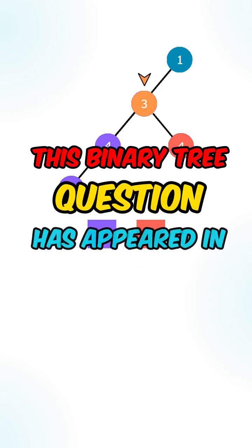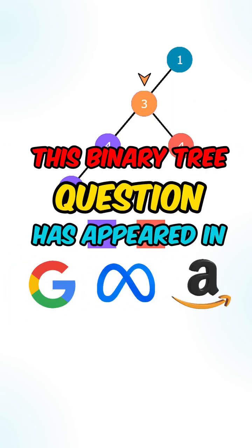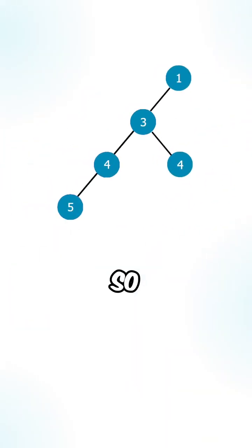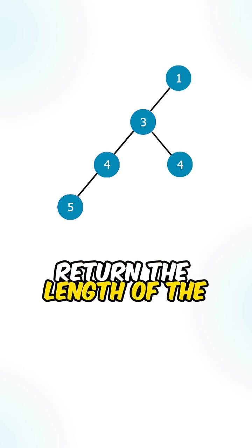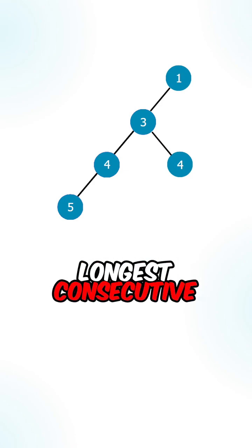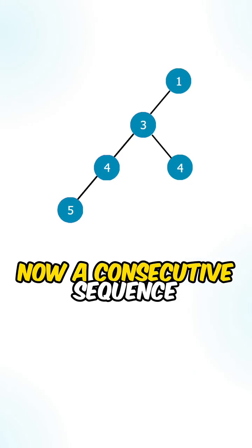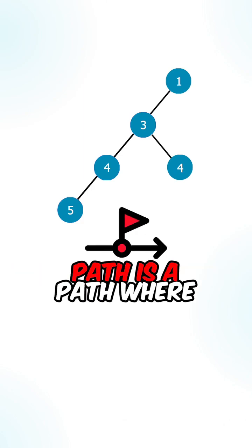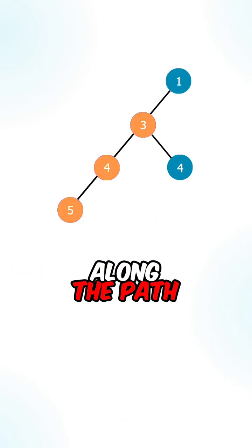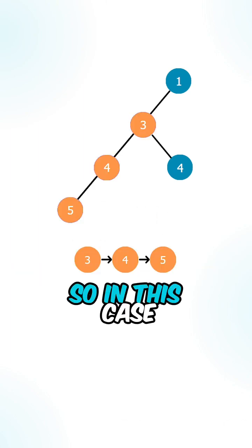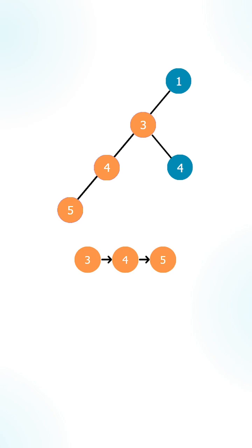This binary tree question has appeared in Google, Meta, and Amazon interviews. Given a binary tree, return the length of the longest consecutive sequence path. A consecutive sequence path is a path where the values increase by 1 along the path — so in this case we have 3, 4, and 5.